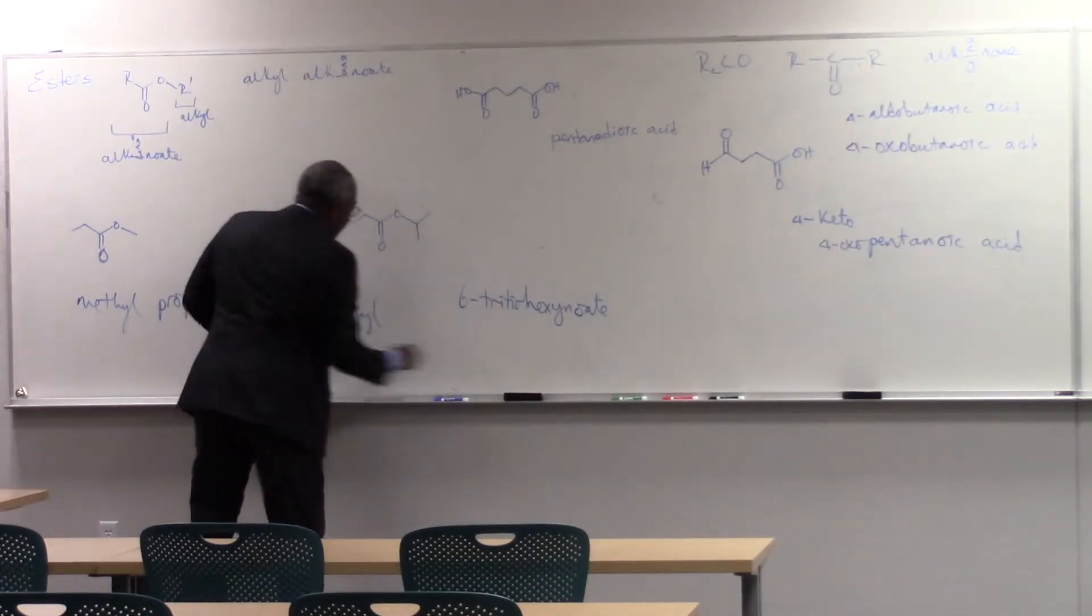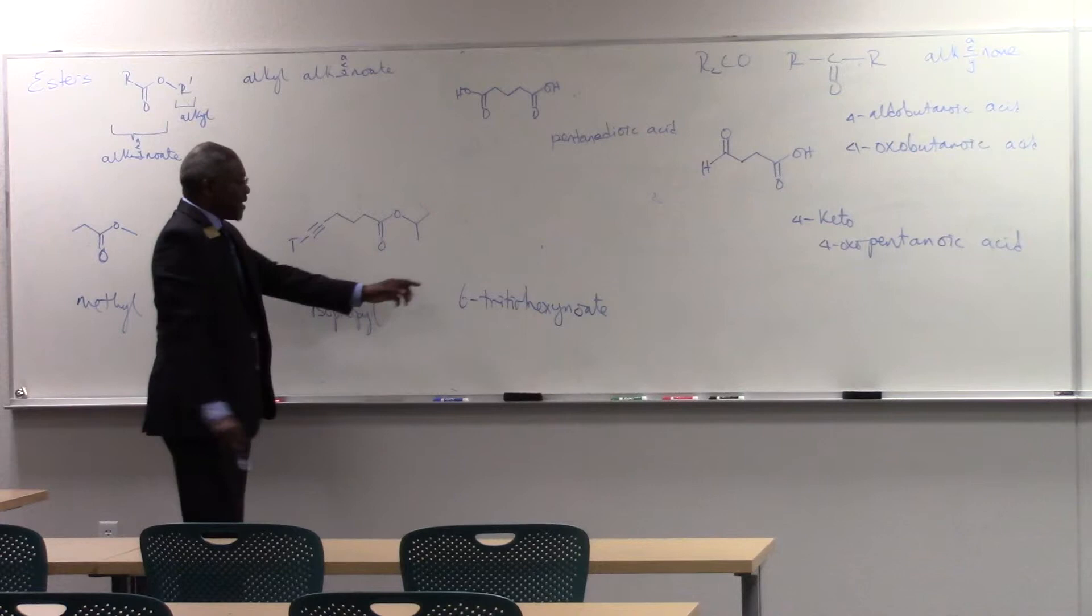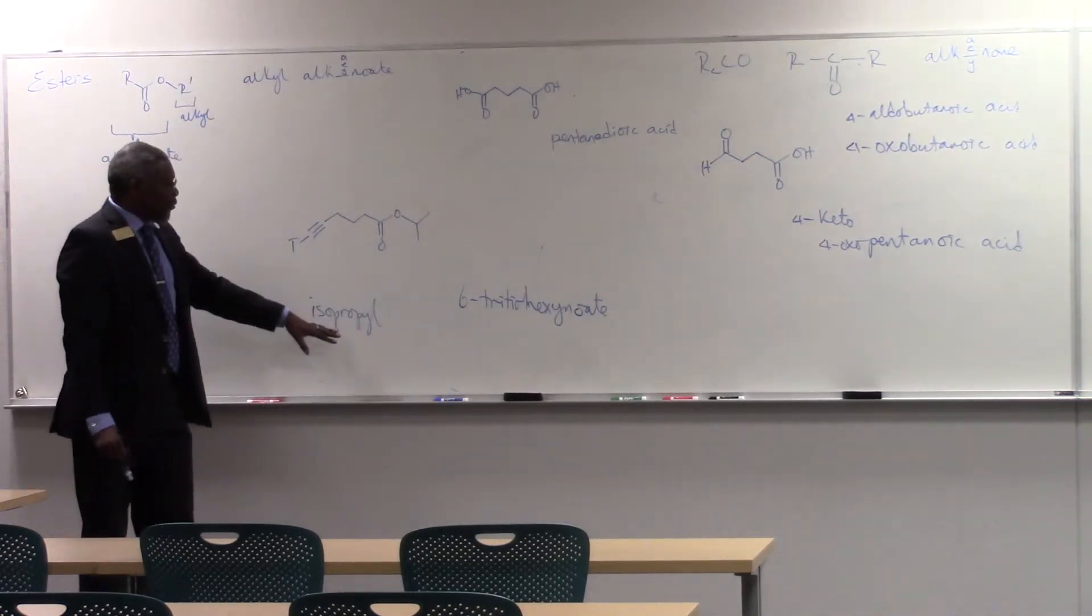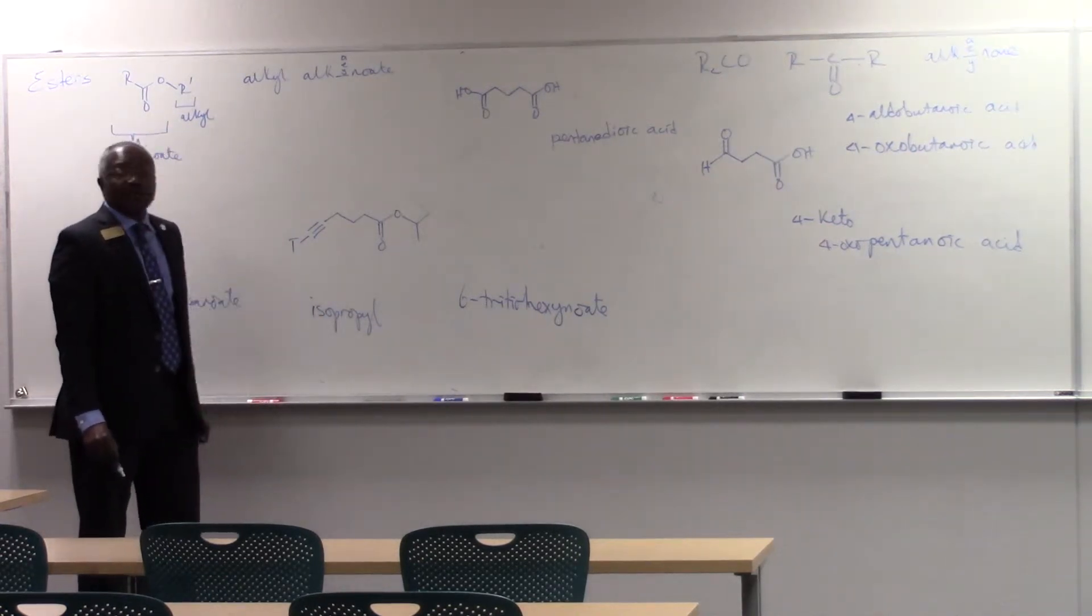So this compound is simply called isopropyl. Imagine this piece is one. So it's isopropyl, 6-tritiohexanoate.